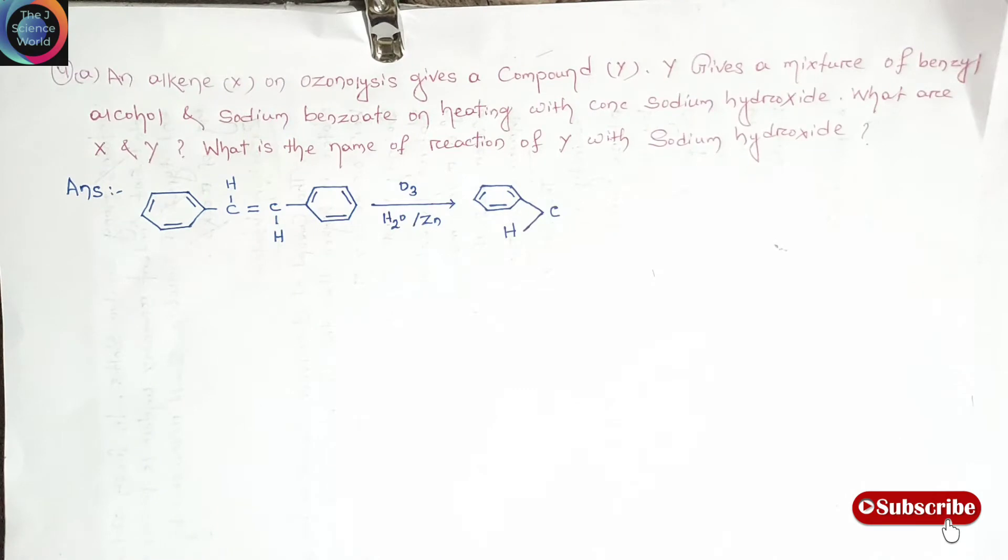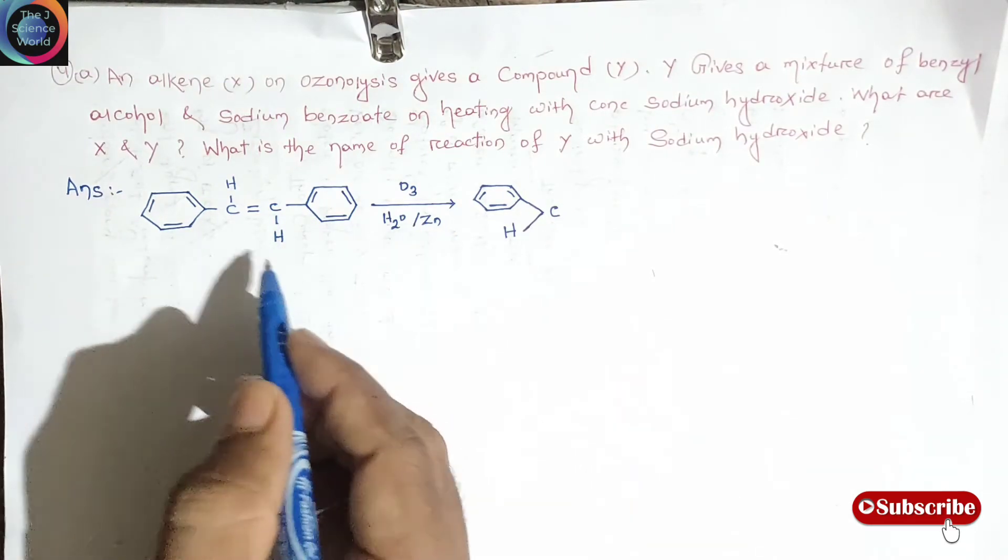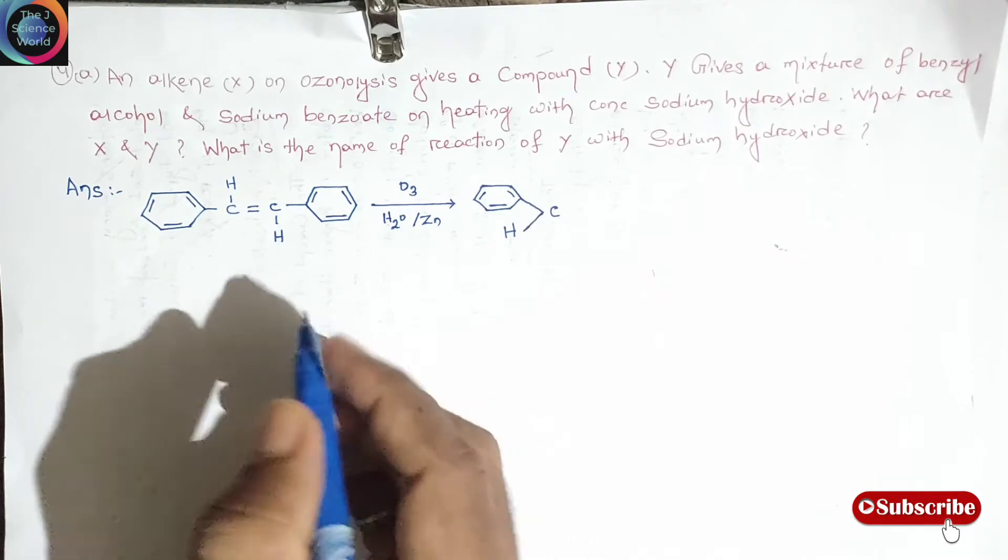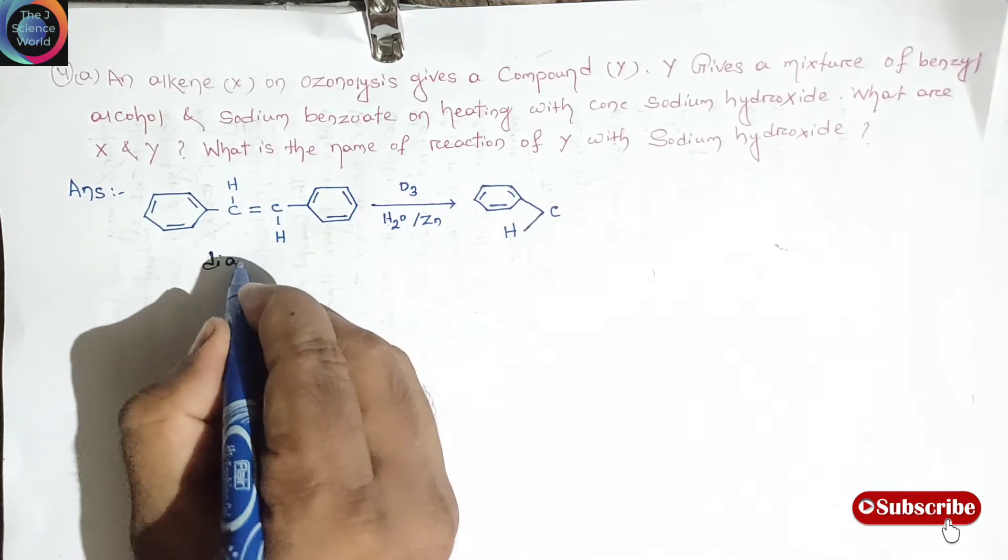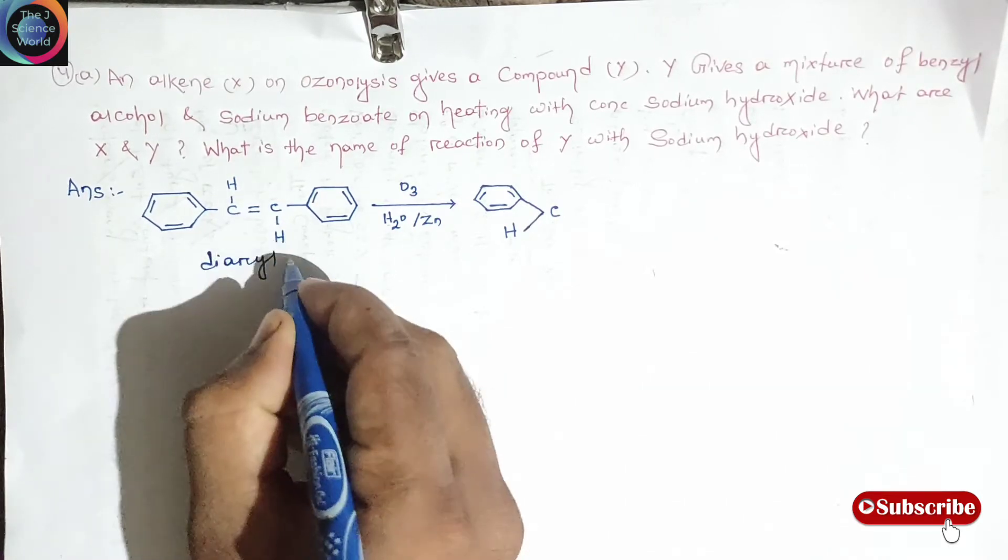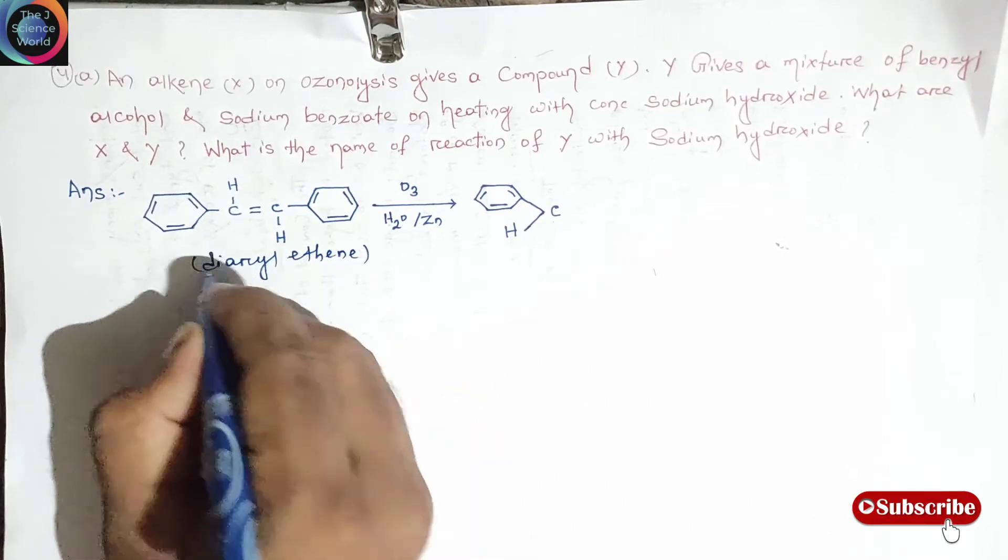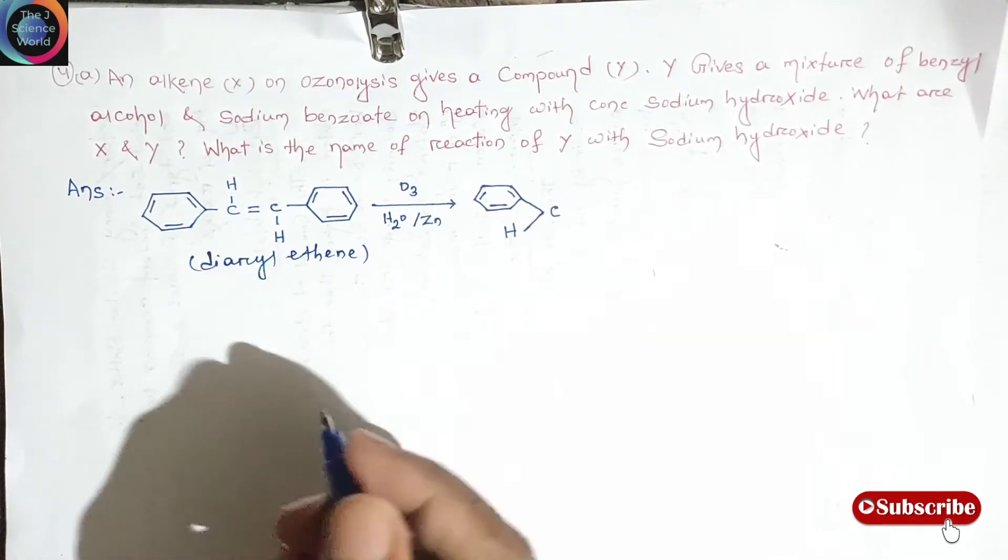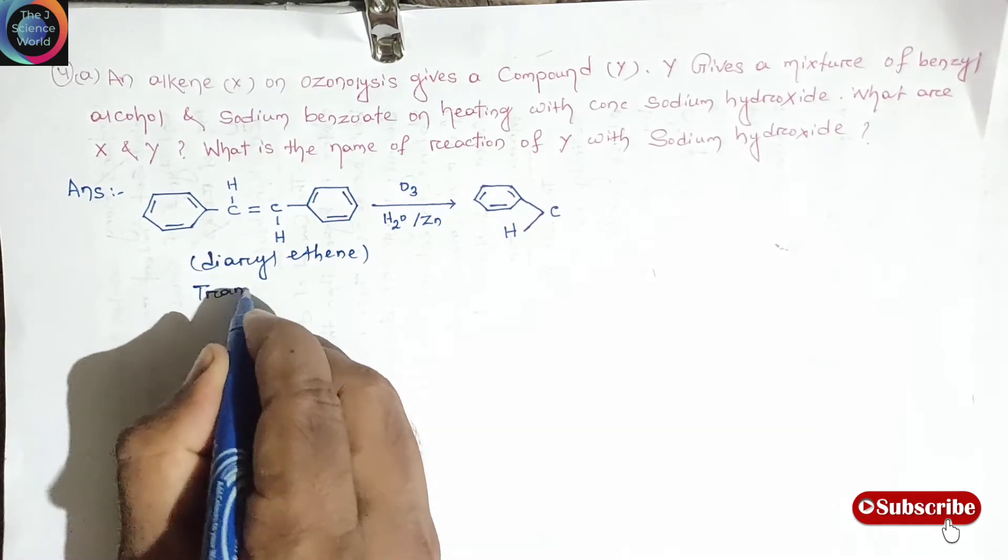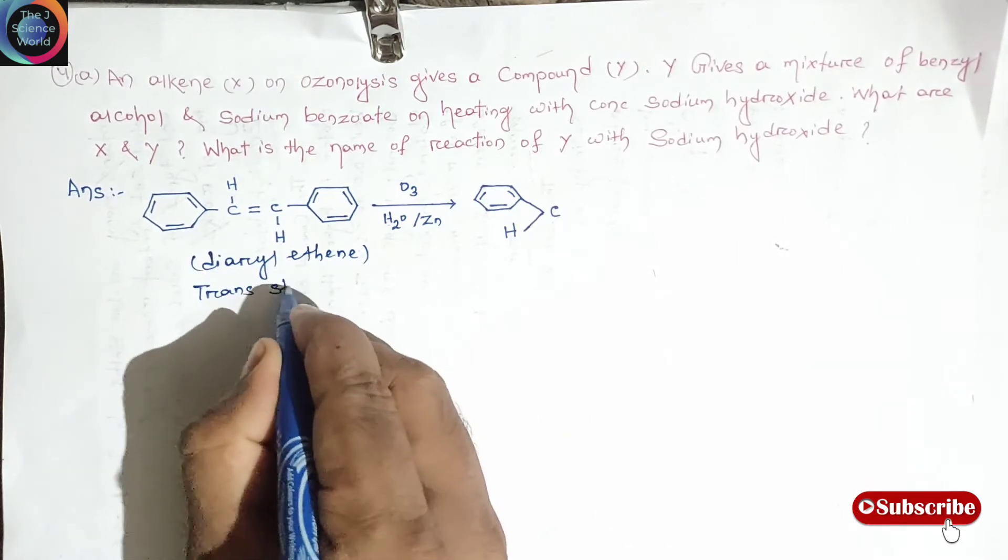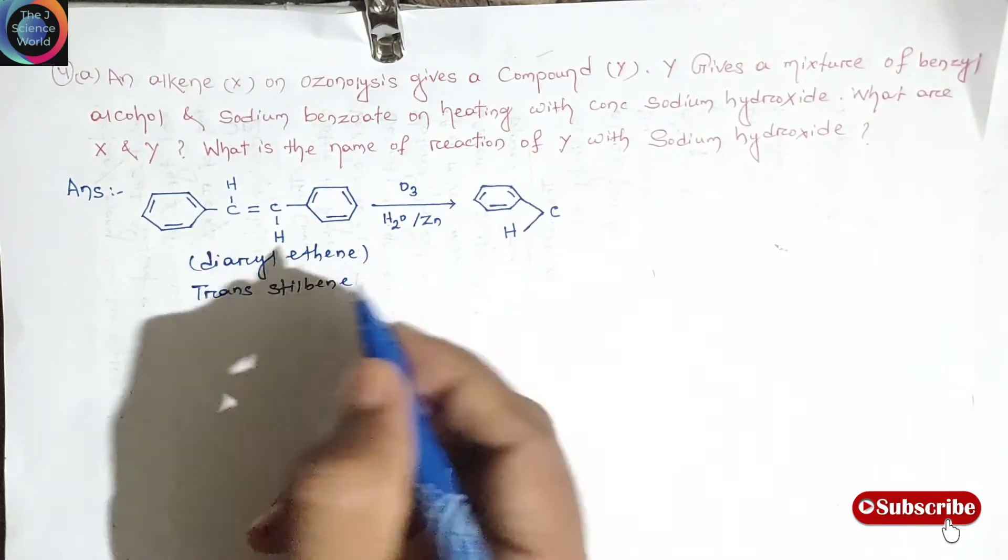Let us get started. Before solving the question, let us have a look. This is the structure of diaryl ethylene, also known as trans-stilbene or e-stilbene.